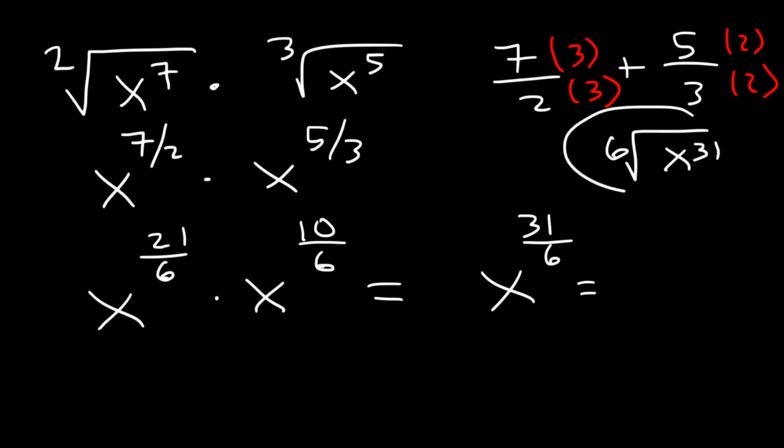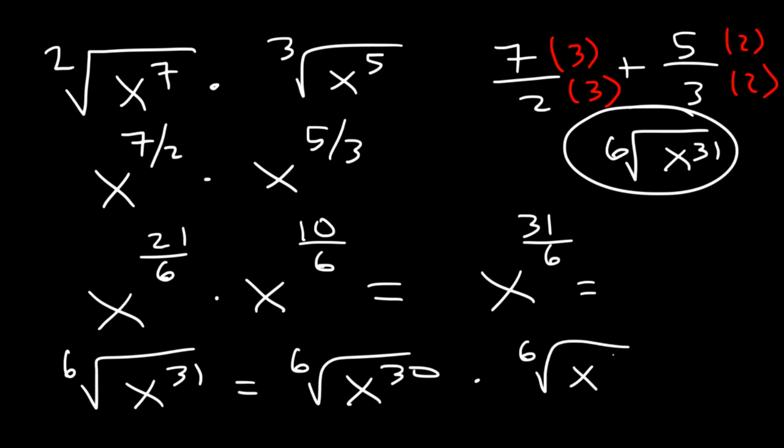Well actually, let's convert it back to radical form. Now 31 is basically 30 plus 1. The 6th root of x to the 30. 30 divided by 6 is 5. So the final answer is x to the 5th times the 6th root of x. That's it.